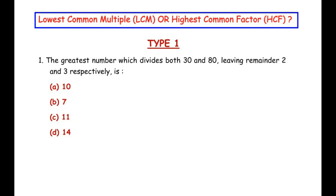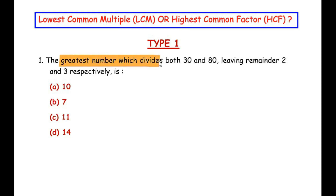The greatest number which divides both 30 and 80 leaving remainder 2 and 3 respectively. Here they have given that the greatest number which divides both 30 and 80. This number has to be smaller than 30 and 80 because it has to divide them — so we have to find the Highest Common Factor. The LCM of 30 and 80 is 240, and 240 cannot divide 30 and 80 as it is bigger. The keyword 'greatest number which divides' tells you to find the HCF.